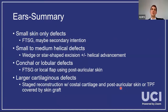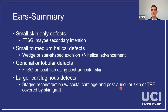To summarize ears: small skin-only defects — skin graft is your go-to. Very small isolated defects — consider letting things granulate. For small to medium helical defects, think about a wedge or star excision, maybe with a helical advancement flap. Conchal or lobular defects — bring in that post-auricular island flap or post-auricular local flap. When you get bigger cartilaginous defects, restore with rib cartilage using post-auricular skin, or a pedicle TPF flap with skin graft.